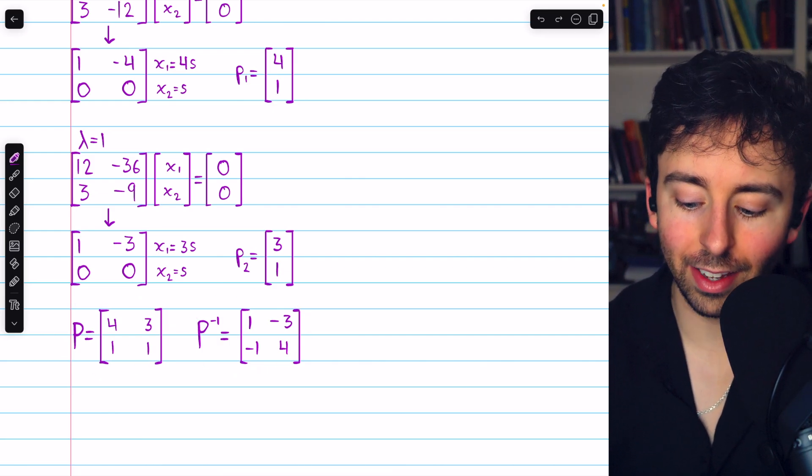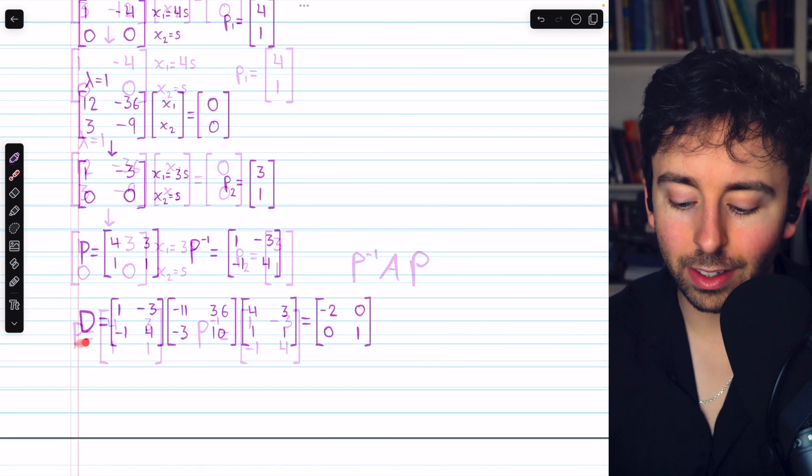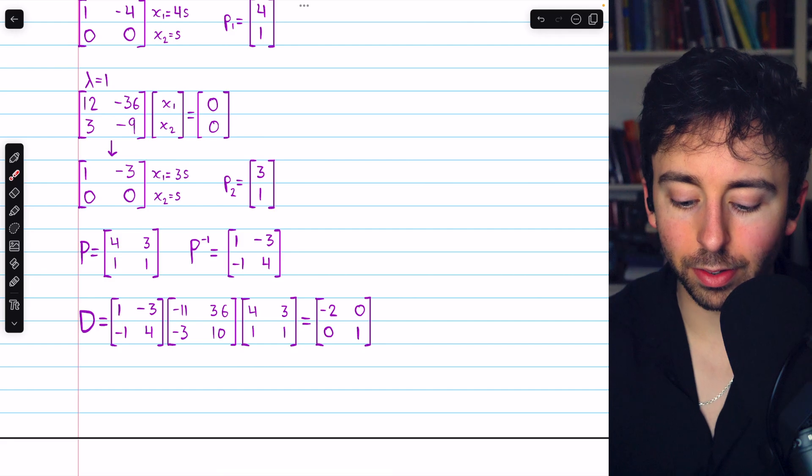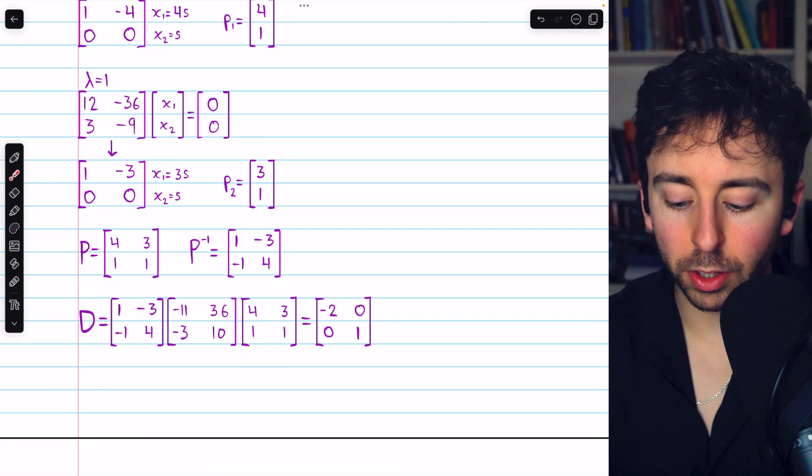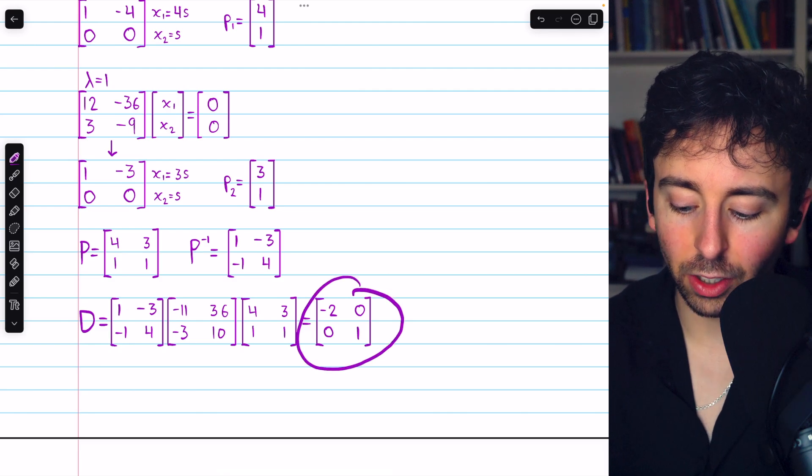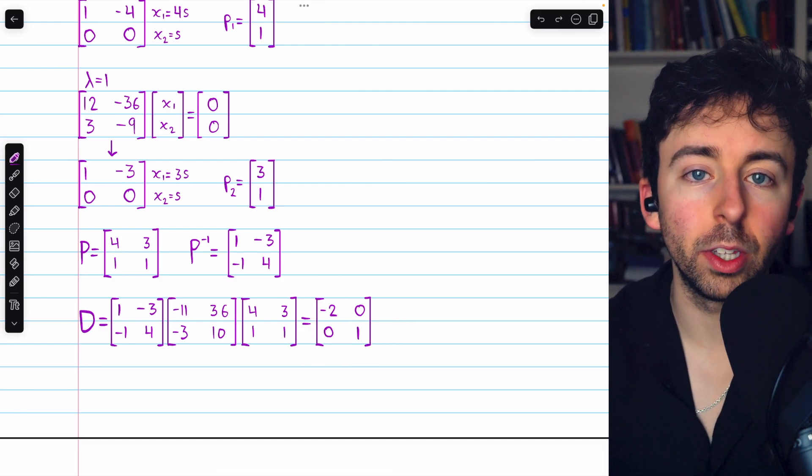In order to diagonalize A, we do P inverse times A times P. And it looks like this. Our diagonal matrix D is found by taking P inverse, multiplying by A, multiplying by P, and as we already said, the result will be this diagonal matrix, whose diagonal entries are the two eigenvalues of A.